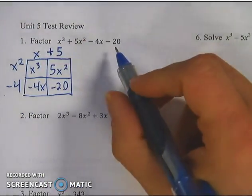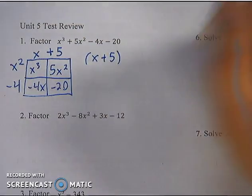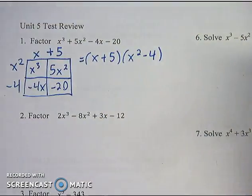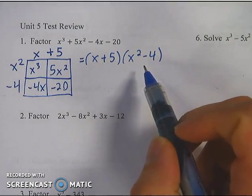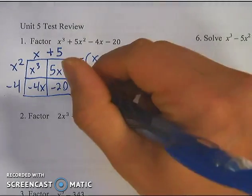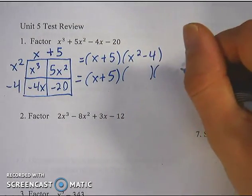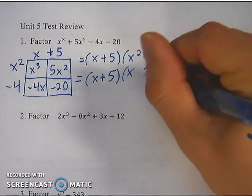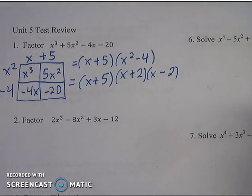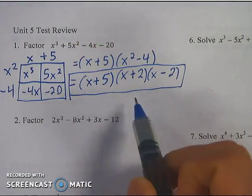So I can rewrite this original polynomial as x plus 5 times x squared minus 4. But I'm not done factoring it because you need to recognize this as the difference of two squares. The square root of x squared is x, and the square root of 4 is 2. So I can keep the x plus 5 and rewrite this as x plus 2 times x minus 2. It didn't say solve, it just said factor, so at this point we're done. If it had said solve, we would set each of these equal to 0 and solve from there.